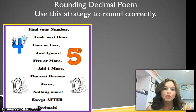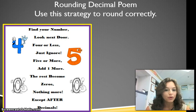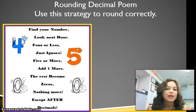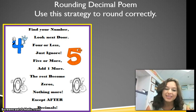Rounding decimal poem — use this strategy to round correctly. Find your number, look next door. Four or less, just ignore. Five or more, add one more. The rest become zeros, nothing more. Except after decimals.